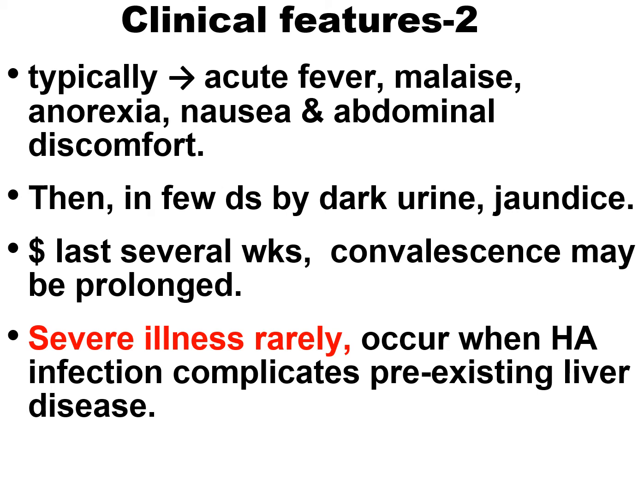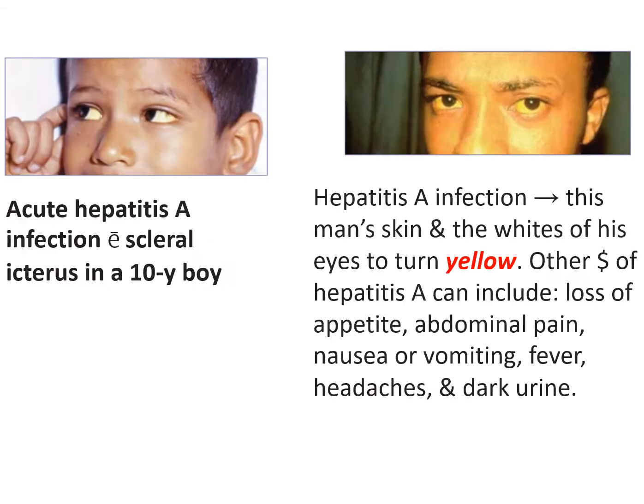Symptoms last several weeks; convalescence may be prolonged. Severe illness rarely occurs when Hepatitis A infection complicates pre-existing liver disease. Two pictures are shown: on the left, acute Hepatitis A infection with scleral icterus in a 10-year-old boy; on the right, a man whose skin and whites of his eyes have turned yellow. Other symptoms include loss of appetite, abdominal pain, nausea, vomiting, fever, headaches, and dark urine.